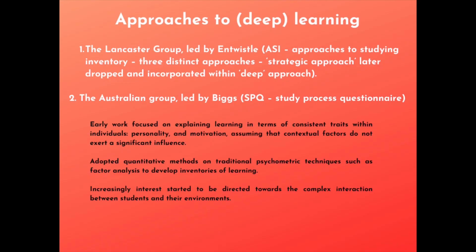At a broad overview, it's possible to identify three main academic groups that have tried to research deep learning. The first is the Lancaster group, led by Noel Entwistle. The second is a group led by John Biggs amongst others, whose early work focused on explaining learning in terms of consistent traits within individuals — such as personality and motivation — with less emphasis on contextual factors in the learning experience.